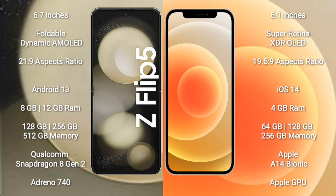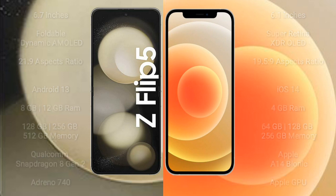iPhone 12 comes with 4GB RAM and 64GB or 128GB to 256GB internal storage, with an Apple A14 Bionic processor and Apple Graphics GPU.